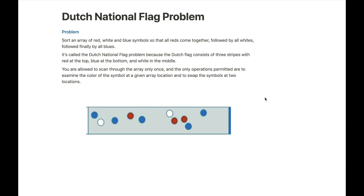This problem is usually called the Dutch National Flag problem because the Dutch flag has three stripes: red at the top, blue at the bottom, and white in the middle. That's kind of how we want to organize these pebbles.